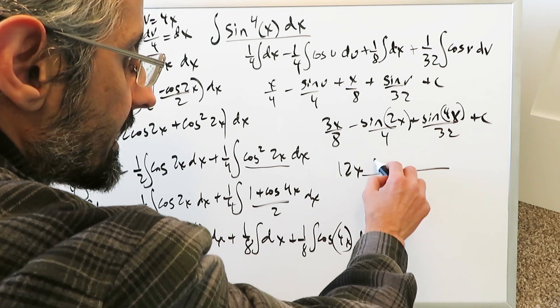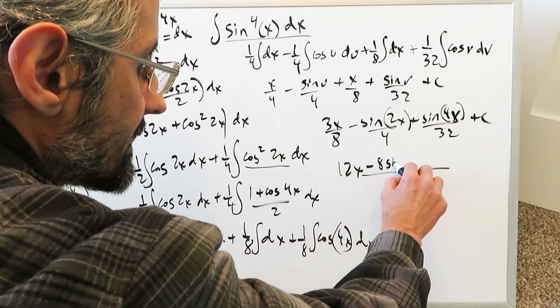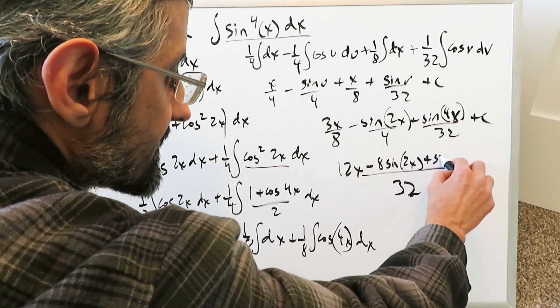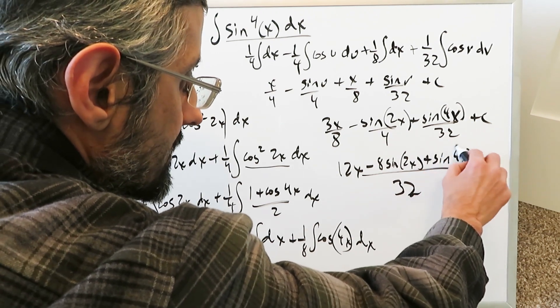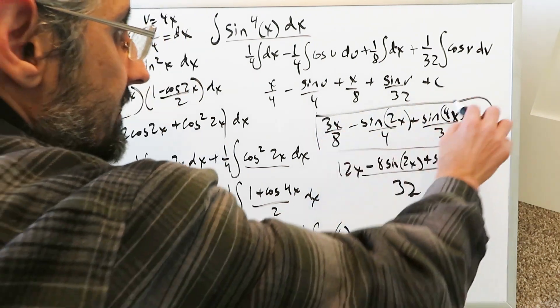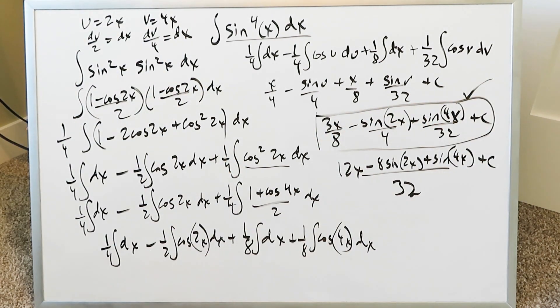4 goes in 32. 8 times here you'll have a minus 8 sine 2x. And then 32 goes one time you'll have a sine 4x plus c. Either of these answers is good. I'll just highlight this one and I'll mark that as a check mark because it looks good to me. And the question is done.